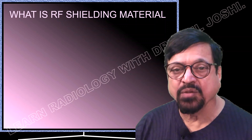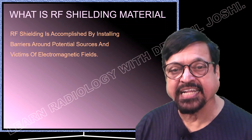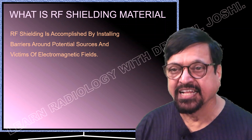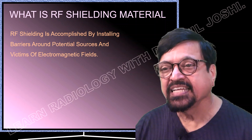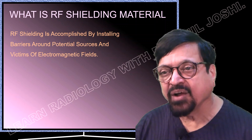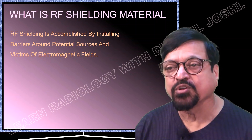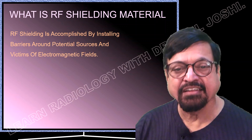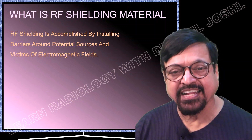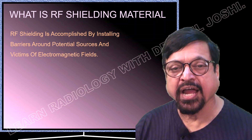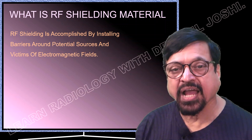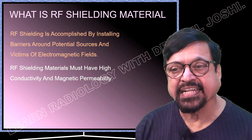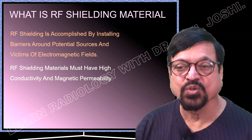Any RF shielding material must not be a magnetic material, since MRI works on the magnetic property of materials. RF shielding is accomplished by installing barriers around potential sources and victims of electromagnetic fields. Potential sources include lifts, generators, and electrical motors, so a barrier must exist between them and the magnet room. The RF shielding material must have high conductivity and magnetic permeability — this is very important.